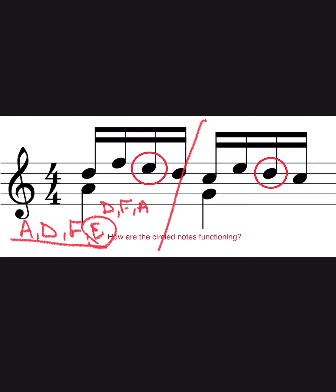The one that's left over, the E — this is the one that's circled. So this E, this circled note, is functioning as a passing tone, PT, because it's moving from the F, a chord tone, dropping a step, and then dropping another step to another chord tone.